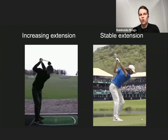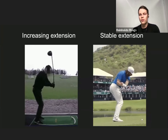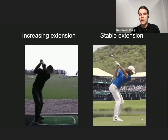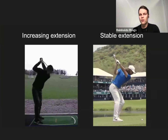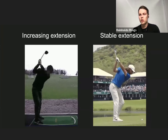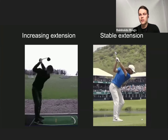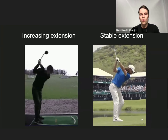That's in contrast to a typical pro pattern — the stable extension of wrist option A, where Tommy Fleetwood has very little change in his flexion-extension. It's very stable. He's controlling the clubface, squaring it up nicely, resulting in very high consistency. Those are the two opposites.